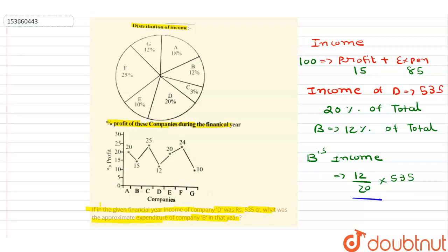So B ki income mere paas 12 by 20 into 535 hai. So if I want to find expenditure of B, expenditure of B is equal to 85 upon 100, 85 upon 100 into 12 by 20 into 535. So 12 will be getting cancelled, 4 into 5. Yaha pe 5 into 4, 5 get cancelled. 85, 17 into 5. So yaha pe 5, 4 into 3 hoga. So 4 will get cancelled.